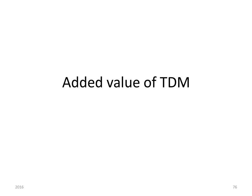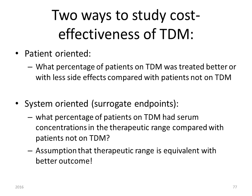Therapeutic drug monitoring costs a lot of time in the hospital — what is the added value? The cost-effectiveness can be studied in two ways: patient-oriented — what percentage of patients on TDM were treated better or with fewer side effects compared to those not monitored — or system-oriented using surrogate endpoints — what percentage of patients on TDM had serum concentrations within the therapeutic range. The latter approach assumes that being within the therapeutic range is equivalent to better outcomes.